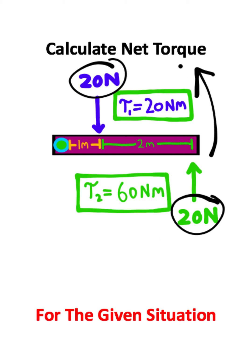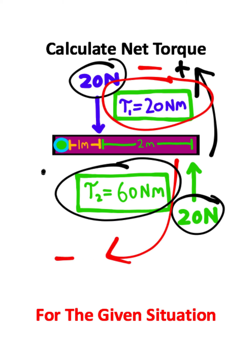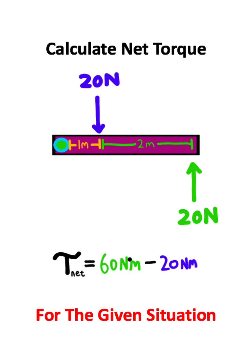Now remember counterclockwise turns are positive. Clockwise turns are negative. This torque creates a clockwise turn and this torque creates a counterclockwise turn. We'll have our positive 60 Newton meters plus the negative 20 Newton meters which is 40 Newton meters so that is the net torque.